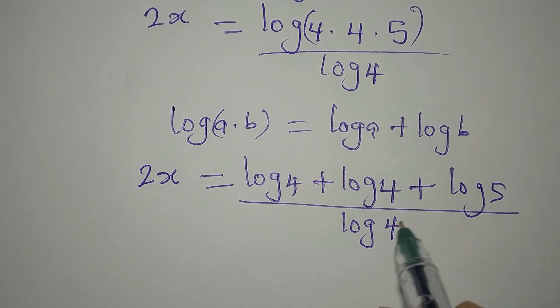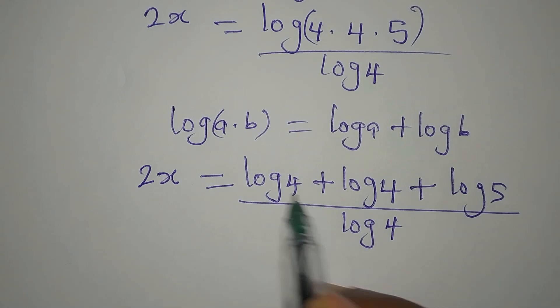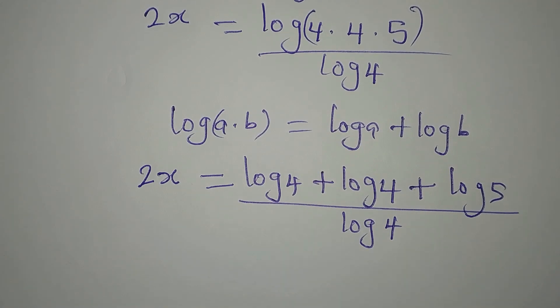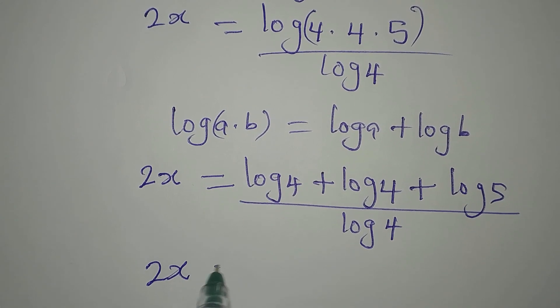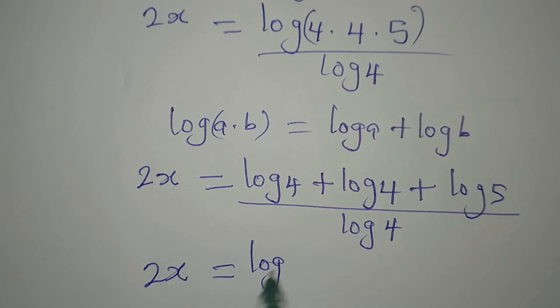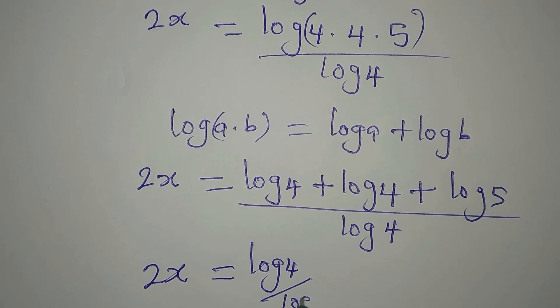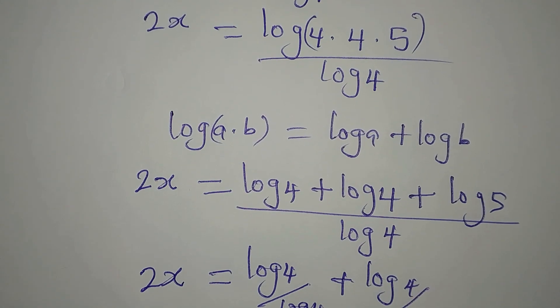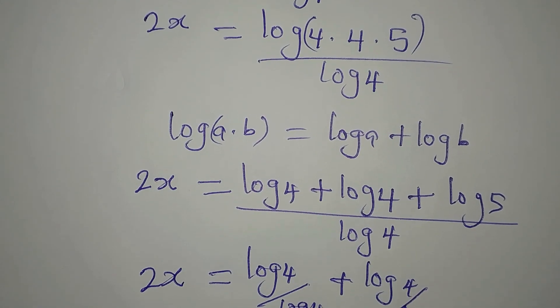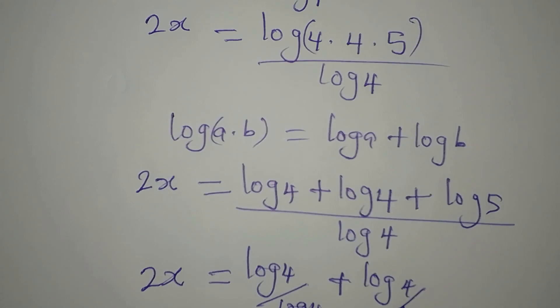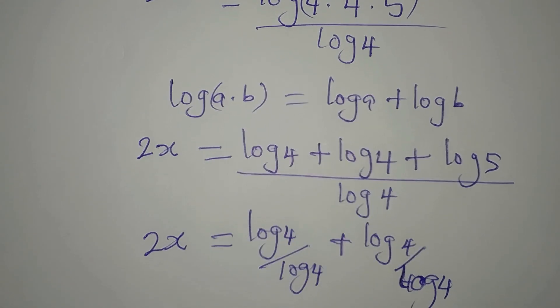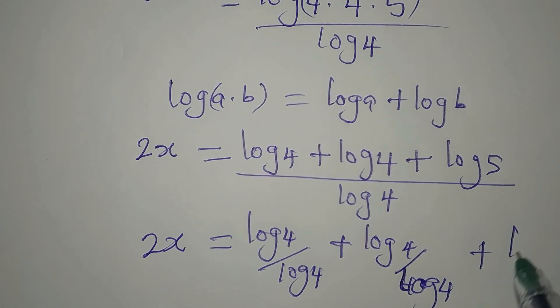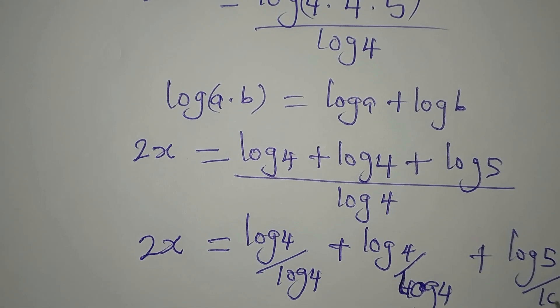Now, you cannot cancel one of the logs and remove the other one. This log 4, the denominator, is for every term in the numerator. So we're going to have 2x equal to log 4 over log 4 plus log 4 over log 4, then plus log 5 over log 4.